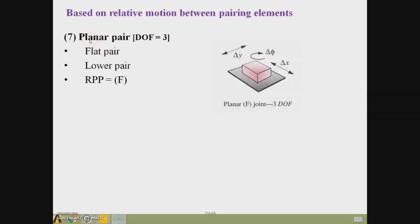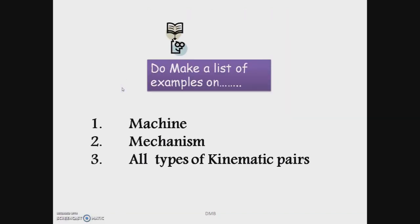The last type is the planar pair, also called a flat pair (letter F). It is a lower pair due to surface contact. A rectangular block placed on a flat surface forms a planar pair. It has 3 degrees of freedom — translation in X and Y directions, and rotation about the vertical Z axis. Thank you.